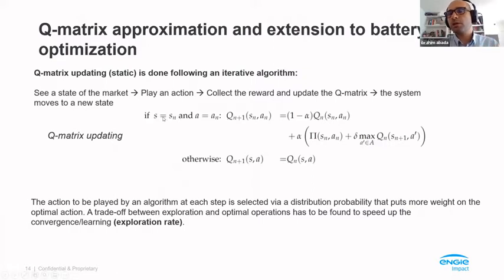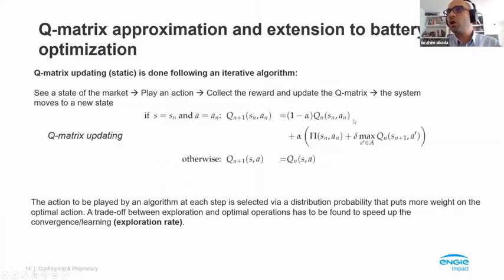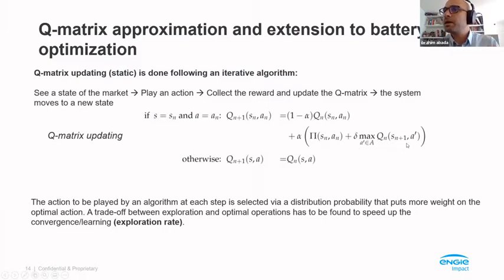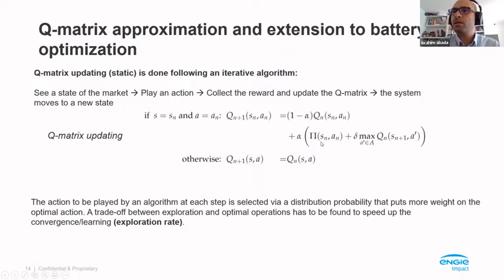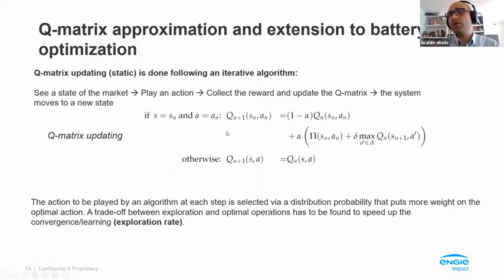The way you update your Q-matrix is quite tricky. If you are at state S_N and played action A_N, the new value of the Q-matrix at iteration N+1 is a convex combination between the old value — so you don't forget past experience — and the new value you got. This new value is like the value function in dynamic programming: the immediate payoff plus a discounted expected revenue afterwards. So at iteration N+1, when the system moves to state N+1, your Q-matrix tells you the best you're going to earn — you discount it, add it to your immediate payoff, and do this combination. For all other states and actions, you do not change the Q-value.